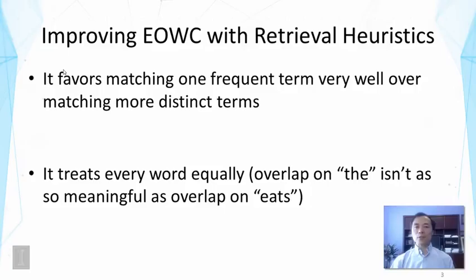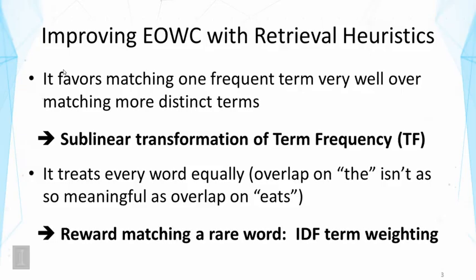So now we are going to talk about how to solve these problems. More specifically, we're going to introduce some retrieval heuristics used in text retrieval, and these heuristics can effectively solve these problems, as these problems also occur in text retrieval when we match a query vector with a document vector.